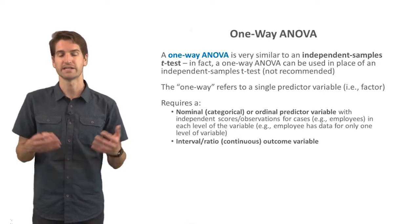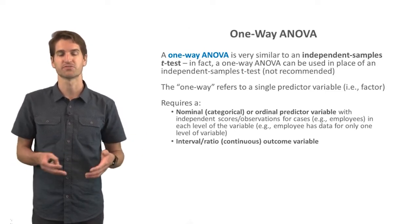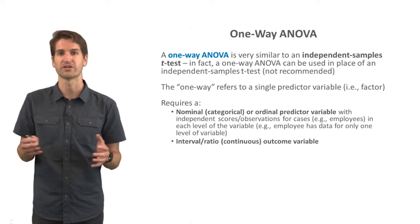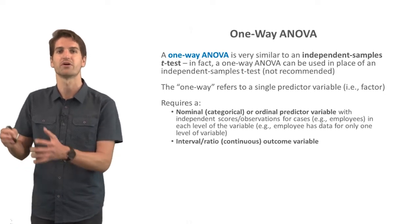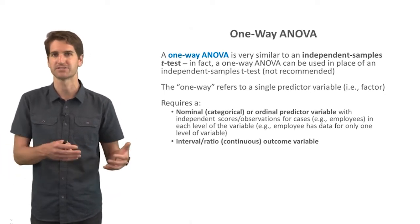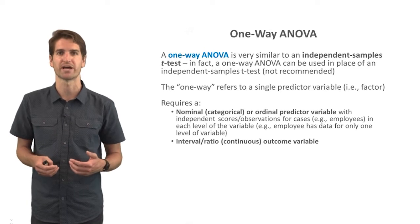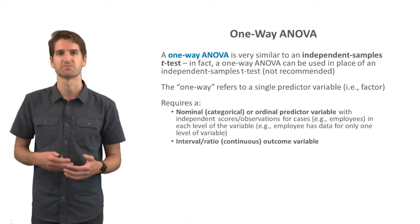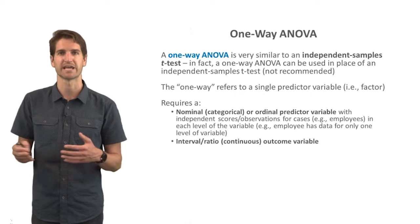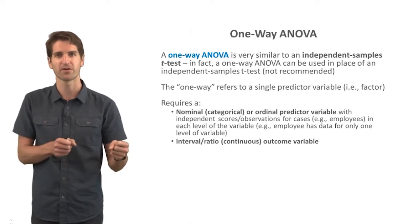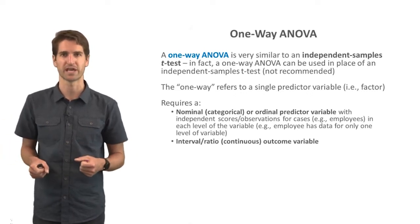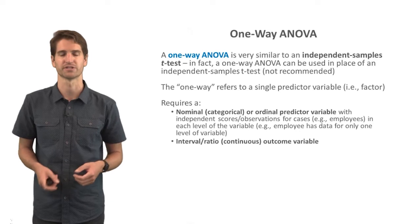A one-way ANOVA also requires an interval or ratio — in other words, a relatively continuous outcome variable. In the example provided, performance would be measured in a relatively continuous way, and that would be the outcome we're comparing in terms of the mean between the three different facilities.